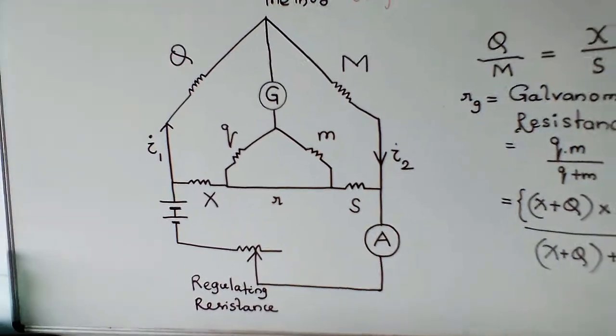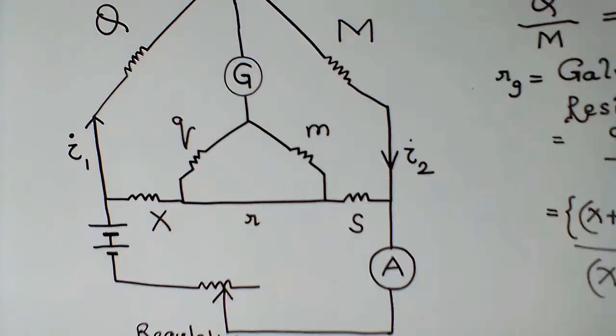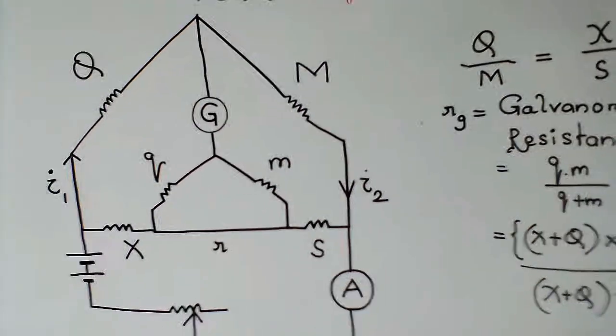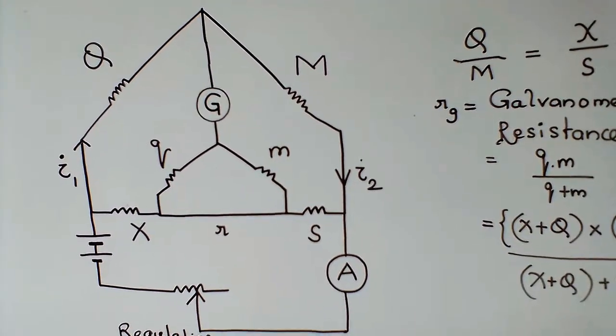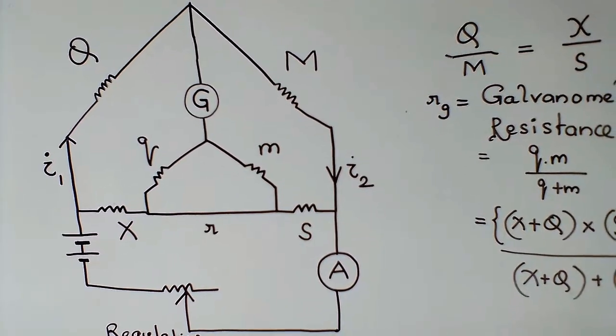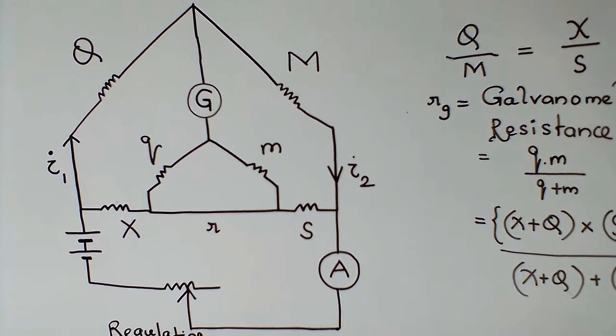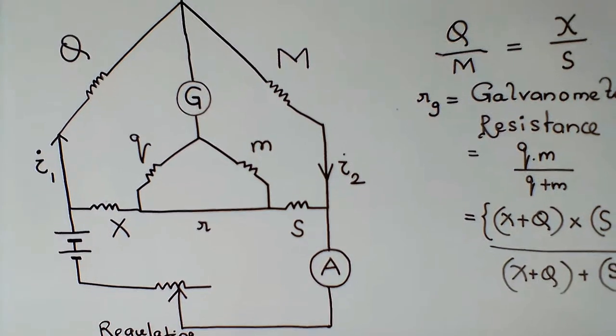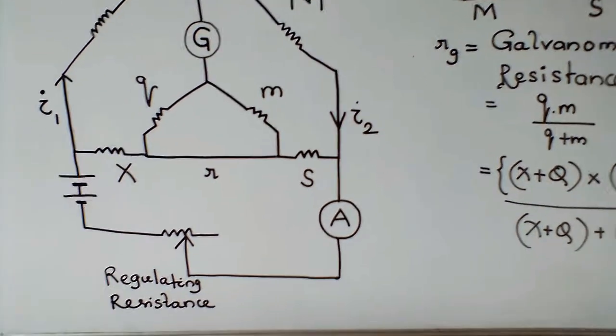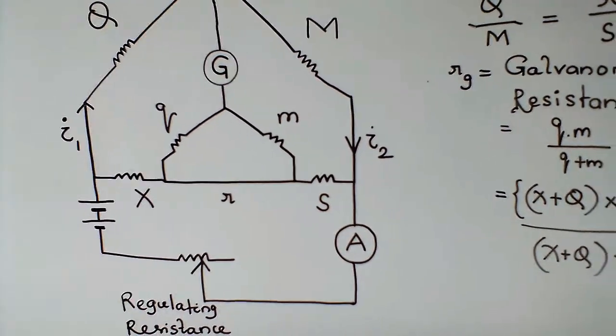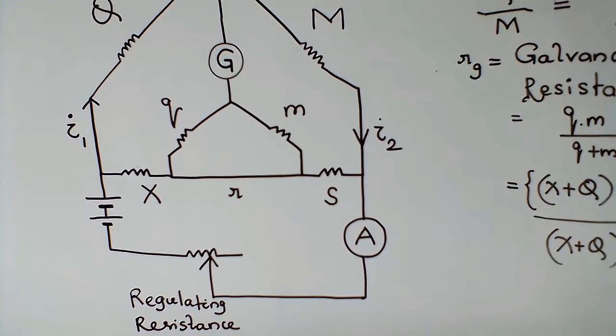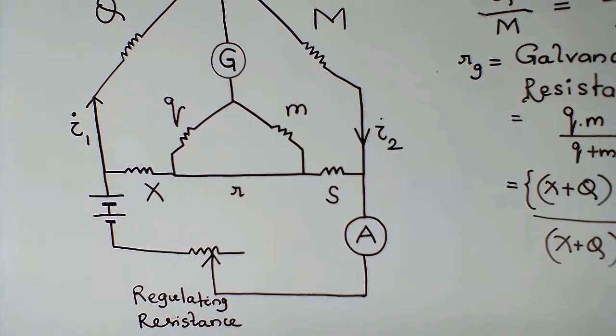In this case, see the figure. There are two bridges: capital Q, M and small q, m connected to galvanometer. Small r is unknown resistance. Regulating resistance is connected in series with ammeter. I1 and I2 are two currents.